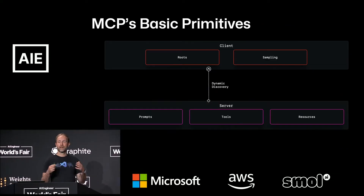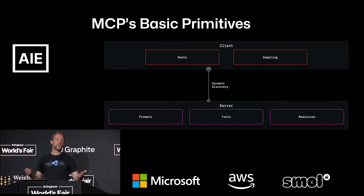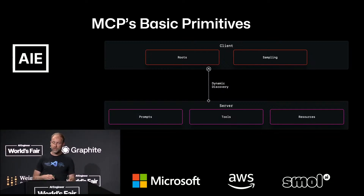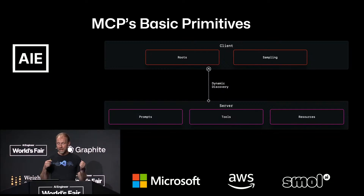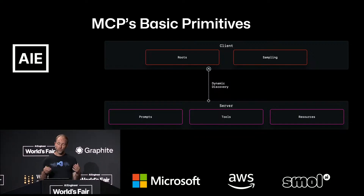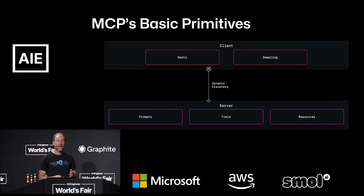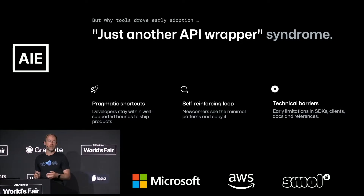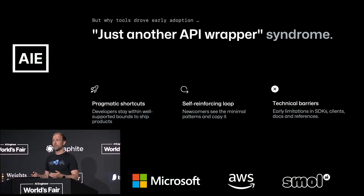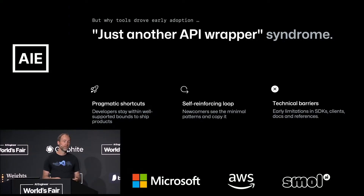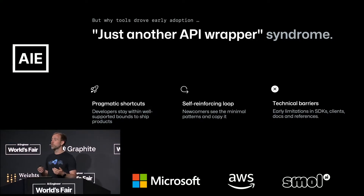All the basics are kind of covered — hopefully in the previous talks. There are routes in the client, sampling, prompts and tools and resources. There's a really rich ecosystem to build dynamic discovery, persistent resources, and rich interactions. But there's a gap in how this is being implemented. There's this 'MCP is just another API wrapper' syndrome happening because people just want to ship and build products — and they're building really excellent products with just tools.